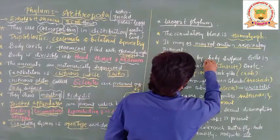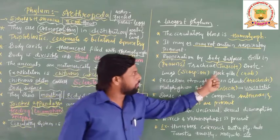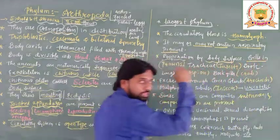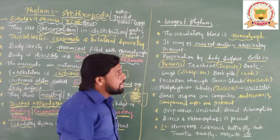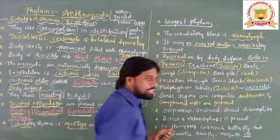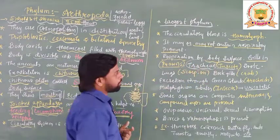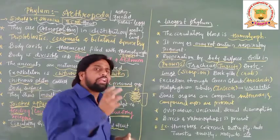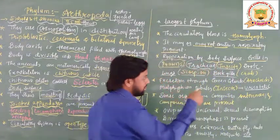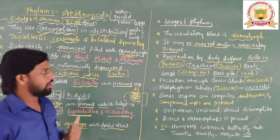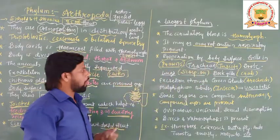Respiration in Arthropoda can occur through the body surface. Some animals in this group, like prawns, use gills for respiration as they are aquatic. Insects respire through a tracheal system. Some animals, like scorpions, have book lungs, which are lung-like structures. Crabs and horseshoe crabs have book gills. So different types of respiratory organs are found in this phylum.